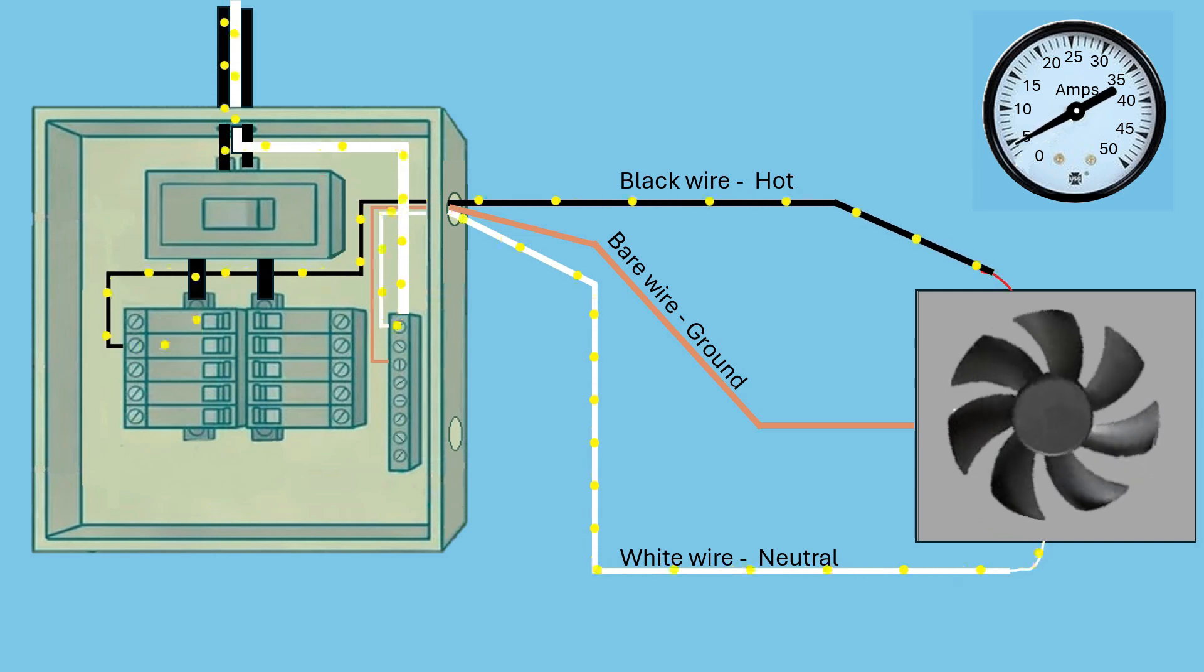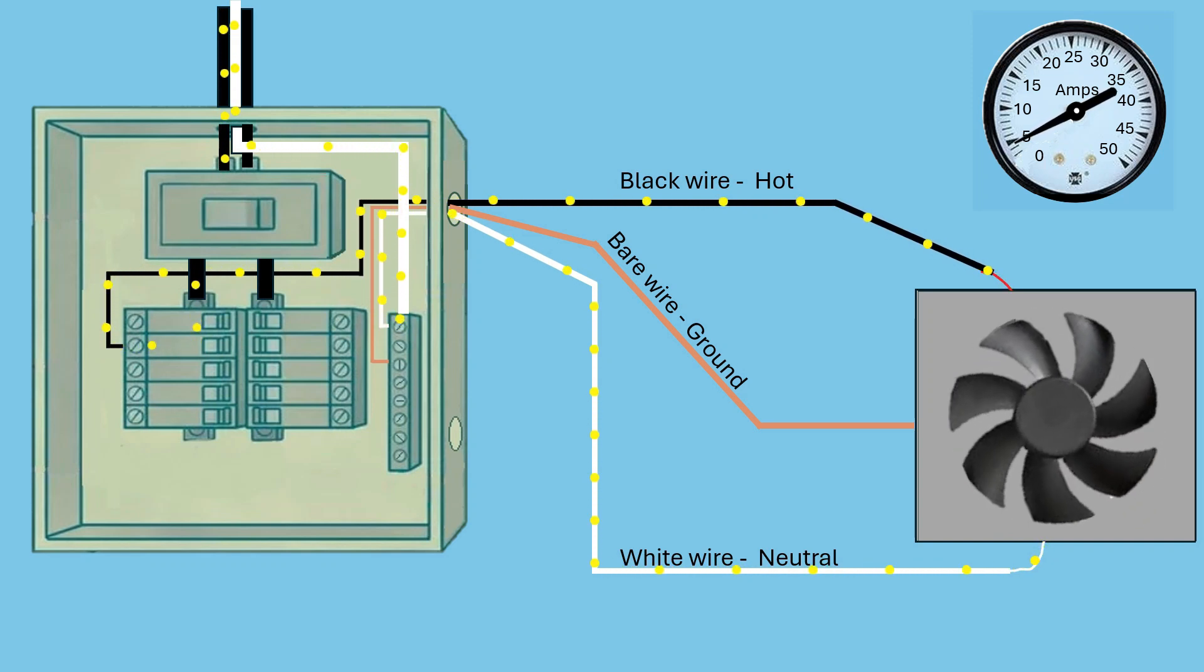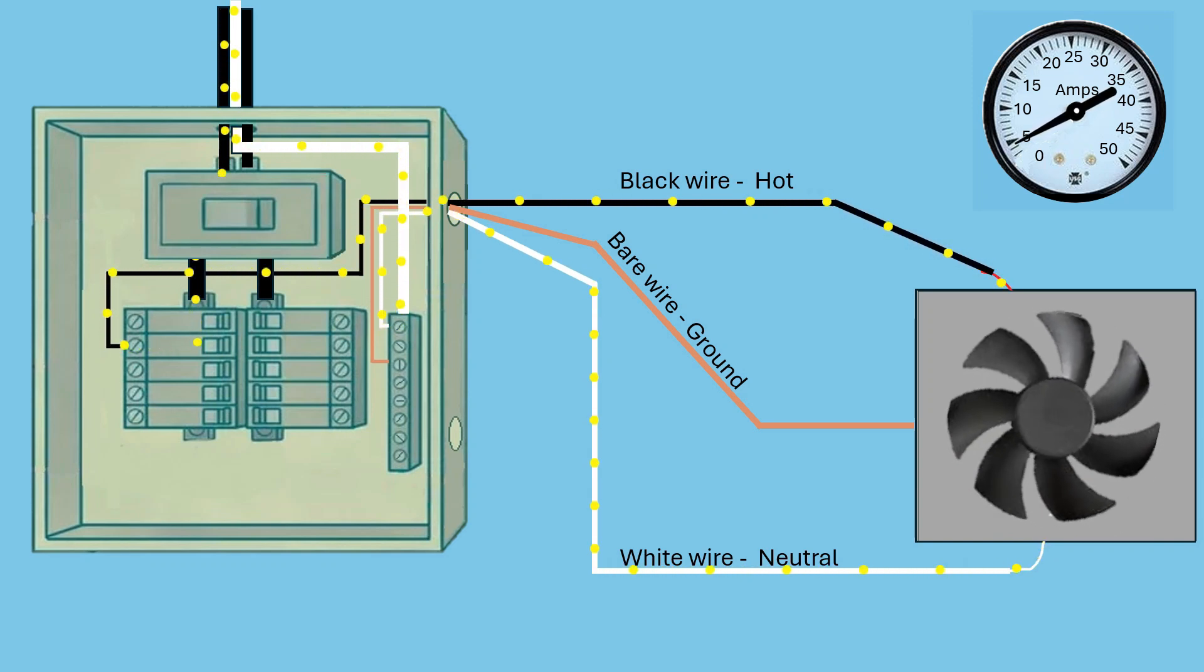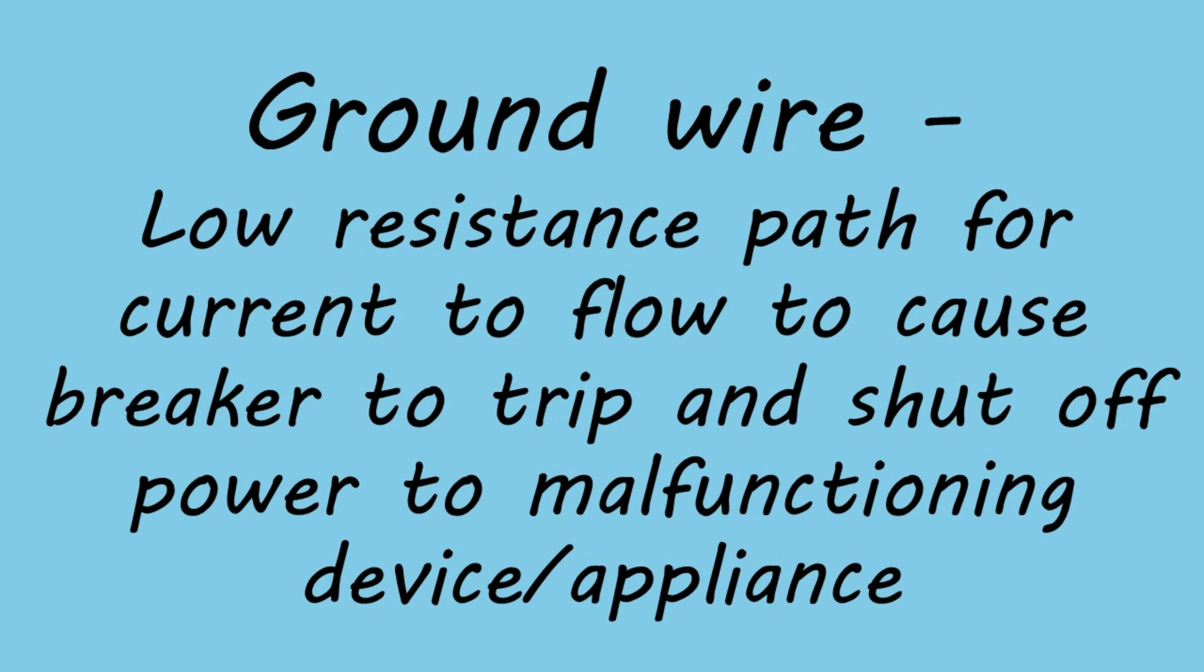So what about the ground wire? Notice there's nothing flowing on that ground wire in this normal operating scenario. Under typical conditions, no electricity flows through the ground wire in your home. In fact, in the entire lifespan of your home, it's possible that no electricity will ever flow on the ground wires. And that's exactly how you want it.